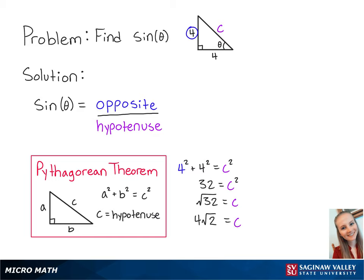Now that we have solved for the length of the hypotenuse, we know that sine of theta is equal to 4 over 4 times the square root of 2. Since we have a 4 on the top and the bottom, these will cancel out and we are left with 1 over the square root of 2.